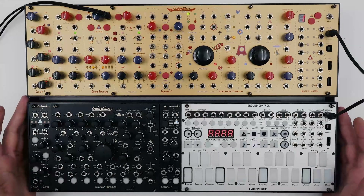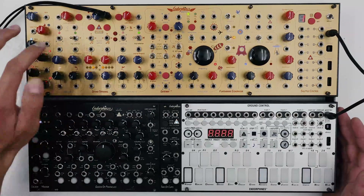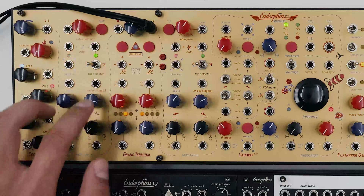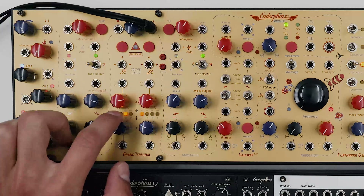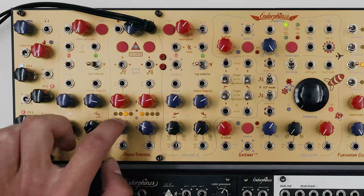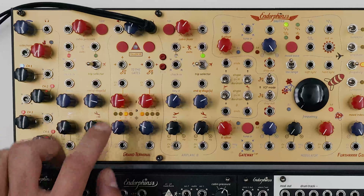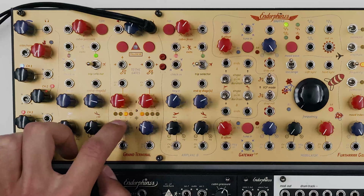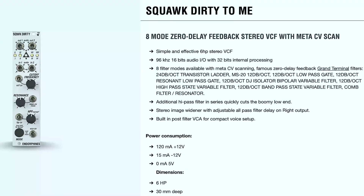In terms of our system, you can find the low-pass gates inside of the Ground Terminal, and we actually have two different types. One is the vector low-pass gate, another is the resonance low-pass gate available on modes three and four. The same thing applies to our Squawk Dirty filter.